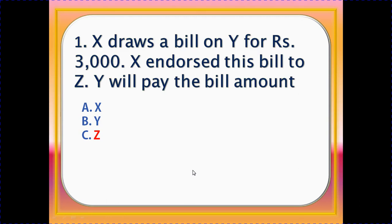Number one: X draws a bill on Y for rupees 3,000. X endorsed this bill to Z. Y will pay the bill amount.